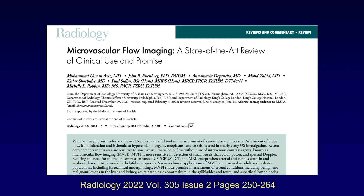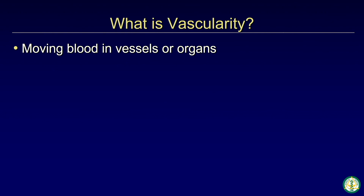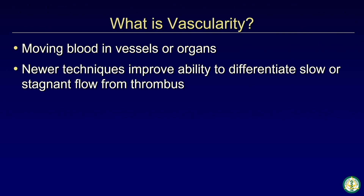We were then invited, because of our interest, to talk about microvascular flow imaging in an invited article for Radiology — I'd refer you to that. But this is something I've been thinking about for a really long time: what is vascularity? Vascularity is moving blood in vessels or organs. These newer techniques improve our ability to differentiate slow or stagnant flow from thrombus — if we can't see flow, it could be stagnant flow, slow flow, or thrombus.